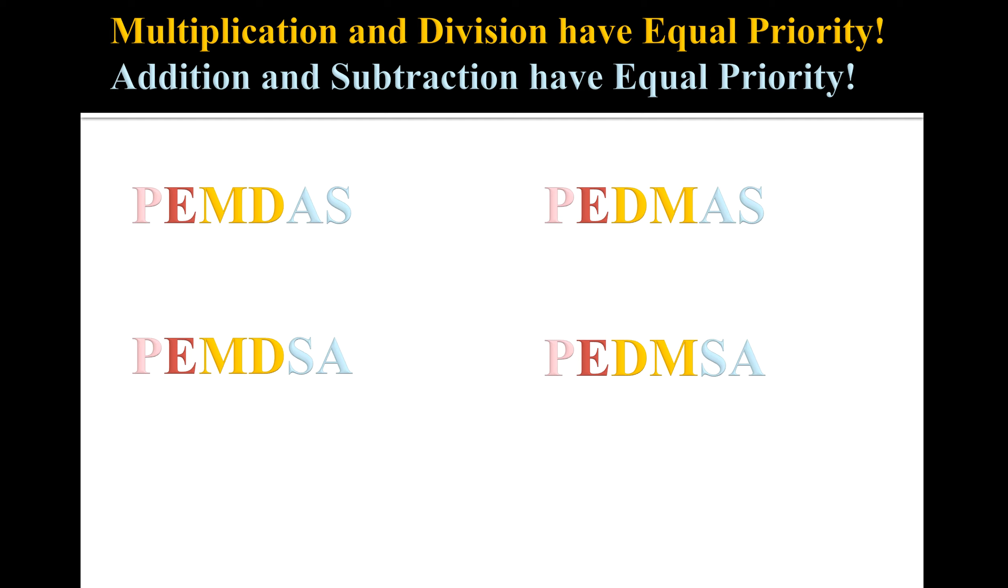And same thing with addition and subtraction—whatever comes first in addition and subtraction as we read an expression left to right, that's what we're going to do. So PEMDAS is a little bit misleading because it could just as easily be PEDMAS or PEMDSA or PEDMSA—all of those are just as accurate.